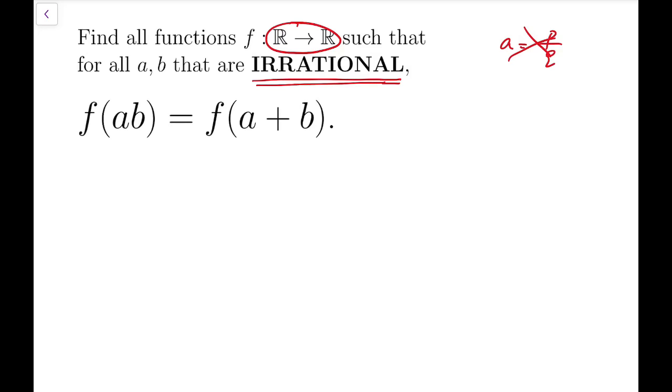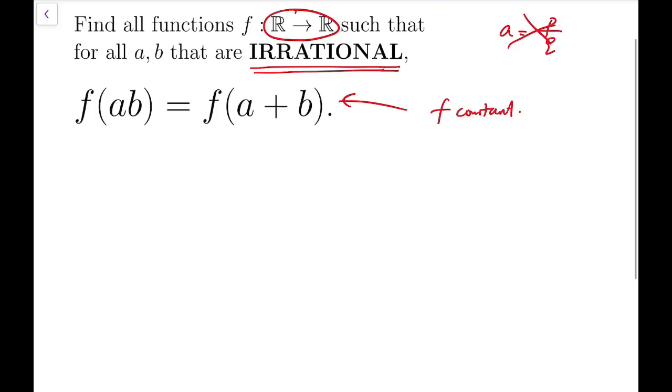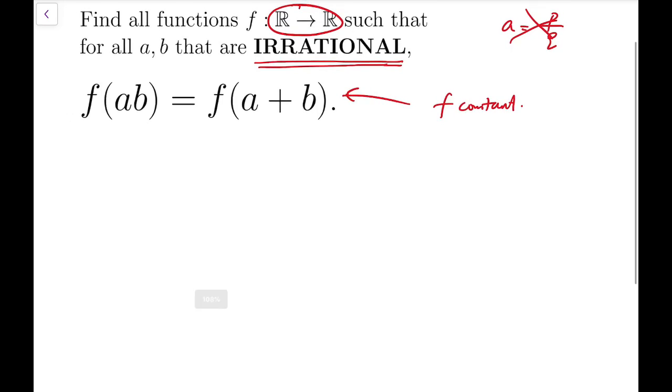So the next question that comes to my mind is what could be a possible function that satisfies this equation. The only thing that I could ever think of is a constant function. This will obviously work because then both sides will simply equal to that particular constant. So the next thing I have to do is to really show that constant functions are the only possible solutions to this functional equation.